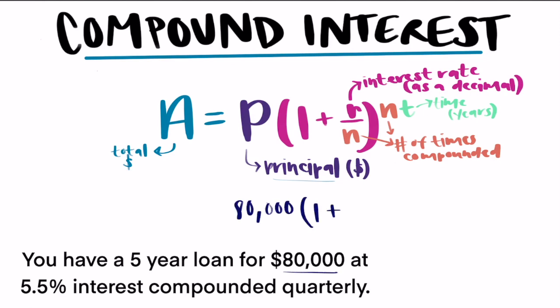Then we want our interest rate, which is 5.5%. But remember, we talked about we have to make that as a decimal. So we can't just put 5.5. To turn a percent into a decimal, we'd have to divide by 100. So move it back two spots, which would make it 0.055.